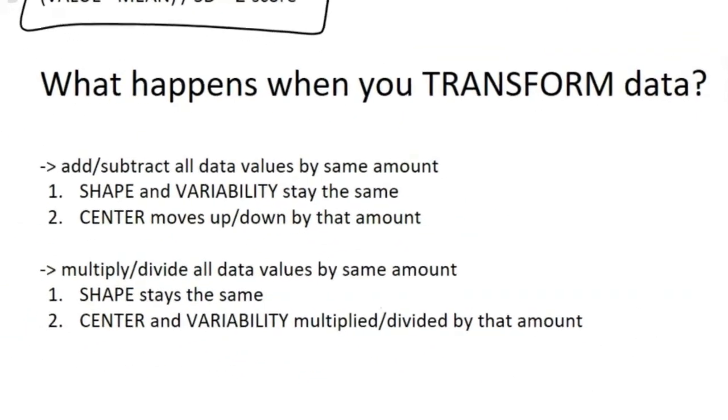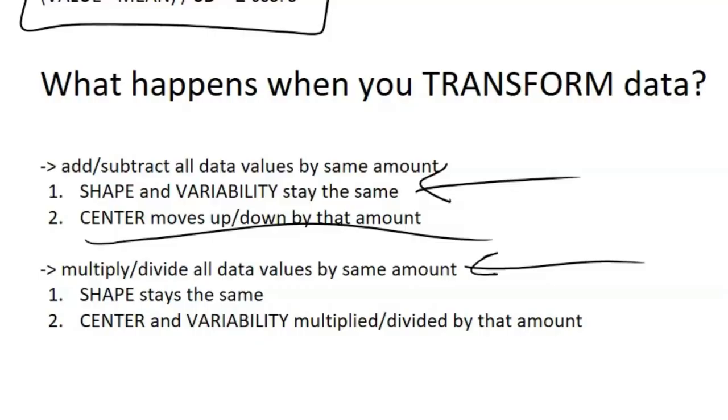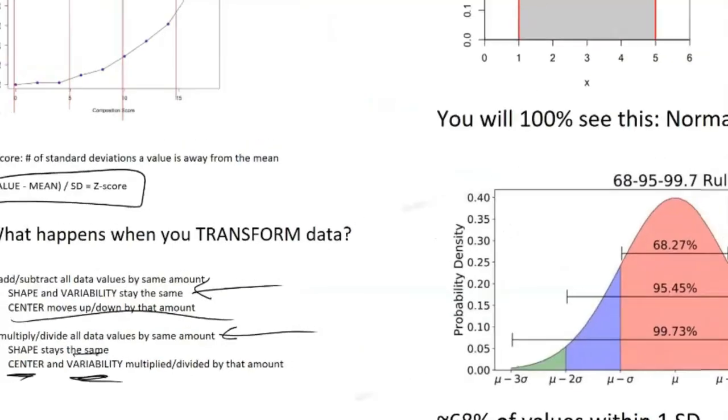Now we're going to talk about what happens when you transform data. Let's say you have a data set - what if you added a certain constant, like you added five to every single value, or maybe if you multiplied every value by 20? What would happen to the shape, the variability, and the center? Here is a summary of what would happen. If you added or subtracted all the data values by the same amount, the shape and variability will always stay the same. The center - your mean or median - will move up or down by that amount. Now if you multiply or divide, that's a different story. The shape will still stay the same, but now your center and your variability will be multiplied or divided by that amount.